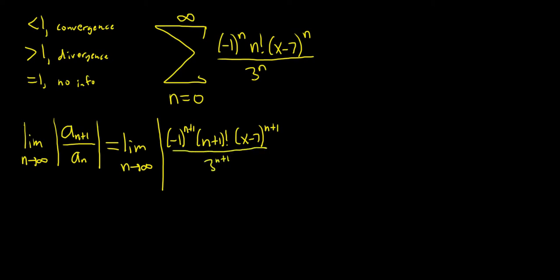So all we've done is we've replaced all of the n's with n plus 1's. Now we're dividing by a sub n. So when we divide by a sub n, we really multiply by the reciprocal. So this here is our a sub n. So instead of dividing, we'll just multiply and flip it. So this is 3 to the n over negative 1 to the n, n factorial, and then x minus 7 to the n.